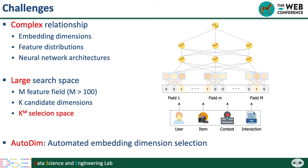To address these two challenges, we propose an AutoML-based model, AutoDim. Our model can automatically select the embedding dimensions for different feature fields.